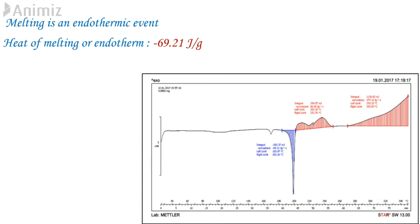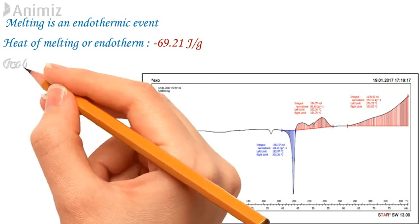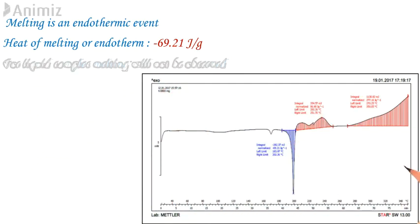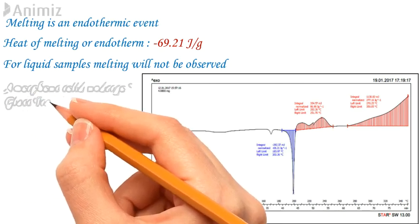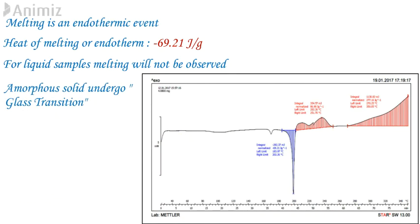Baseline is the black curve. Also in the graph, a normalized value can be seen. It is nothing but the heat of melting or endotherm. Note, for liquid samples, melting will not be observed. If the powder is amorphous in nature and not crystalline, then before melting, one more event it will undergo which is known as glass transition.